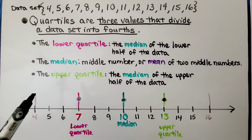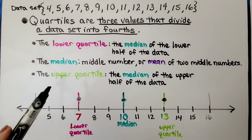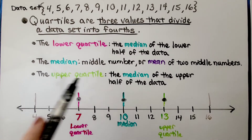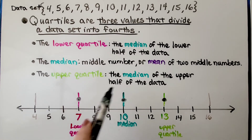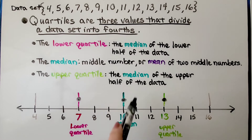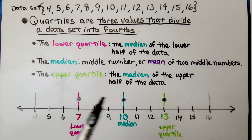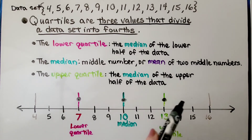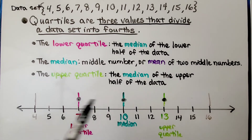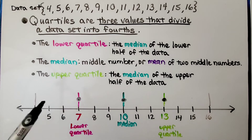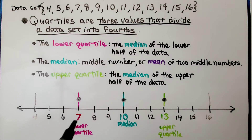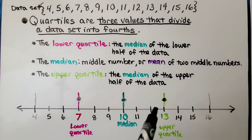So we can see it's split into one, two, three, four parts — that's the fourths. And the quartiles are the three values: the lower quartile, the median, and the upper quartile.